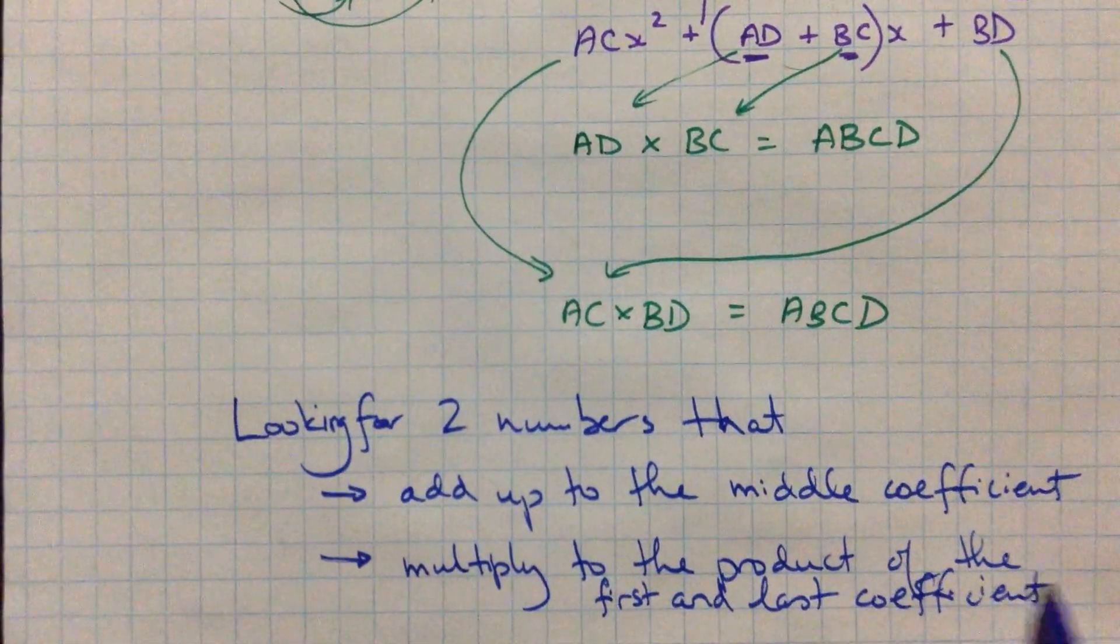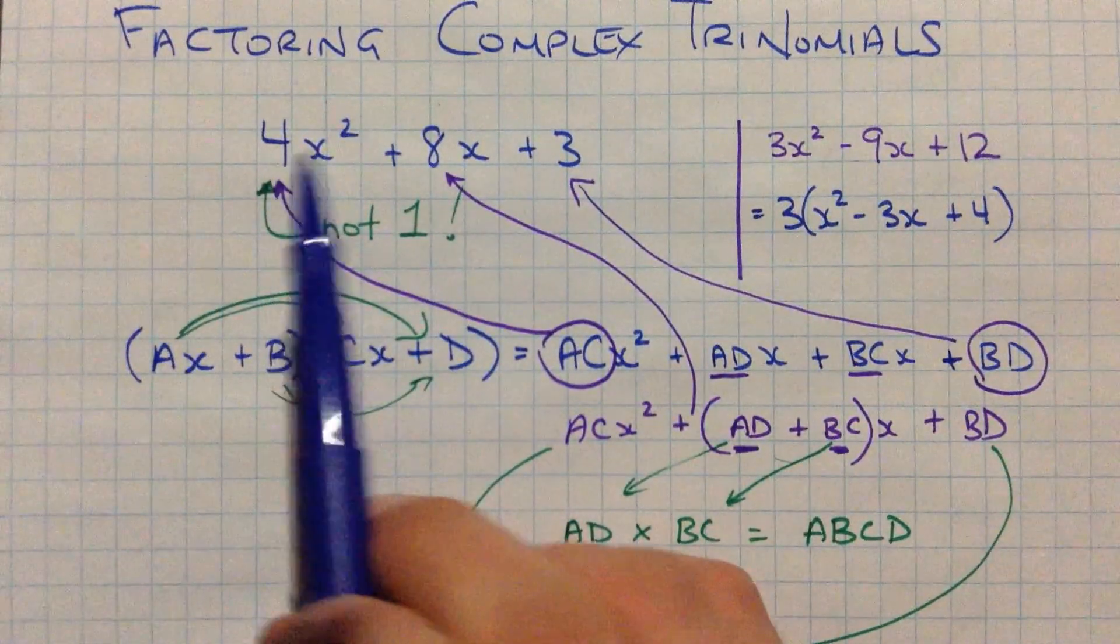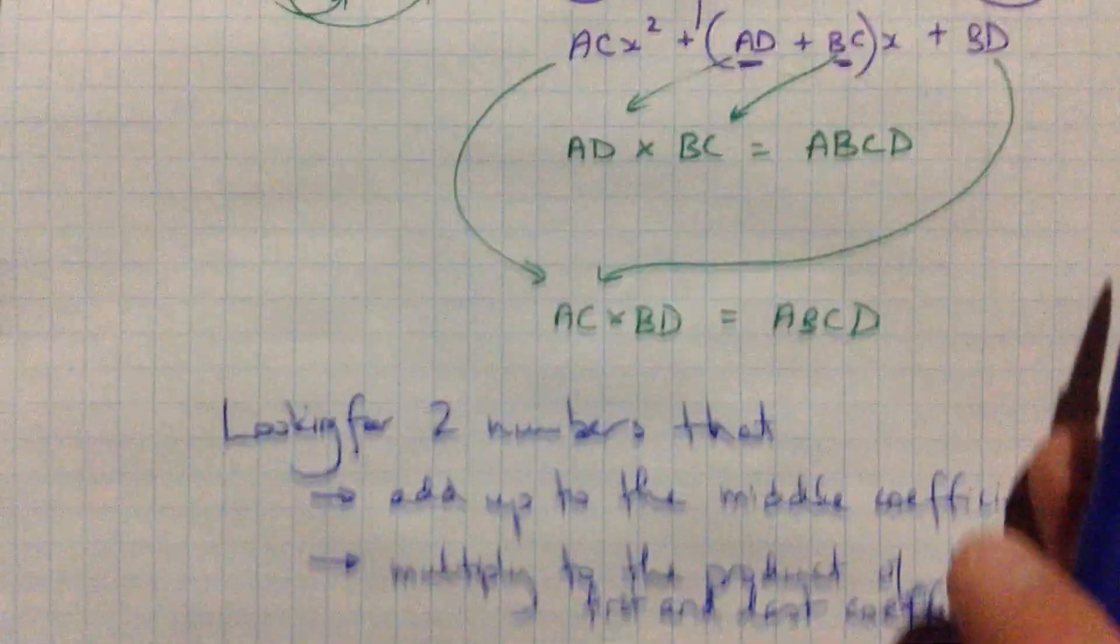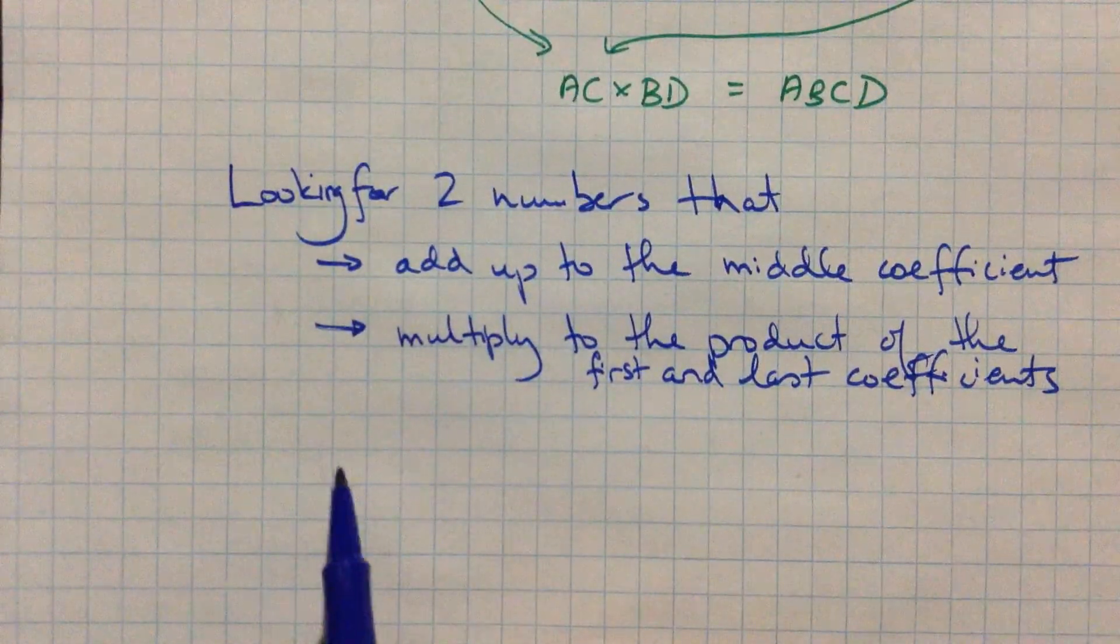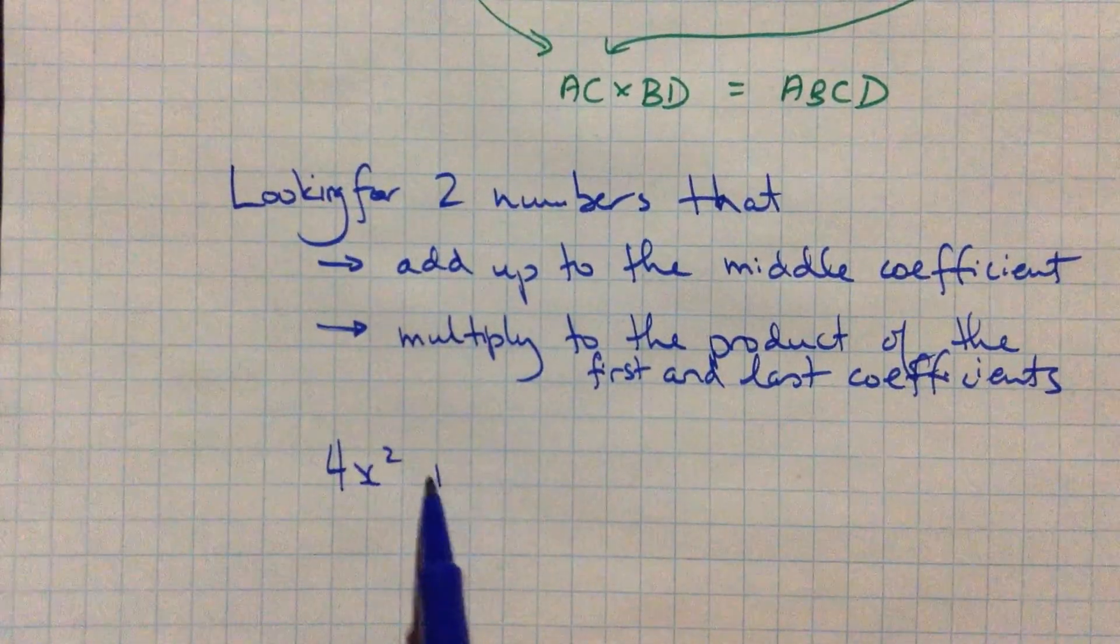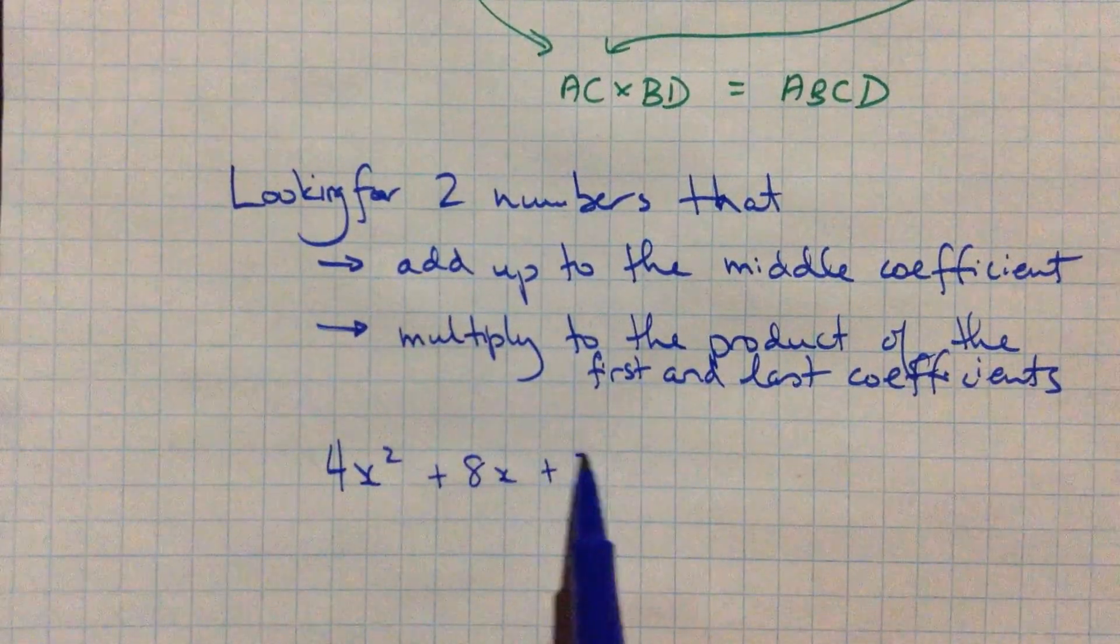So those two numbers are going to add up to the middle coefficient, and they will multiply to, let's be careful here, to the product of the first and last coefficients. So that is, they multiply to the same thing, same answer that you get when you multiply 4 and 3. Okay, so let me rewrite that specific question, and we'll finish it off down here.